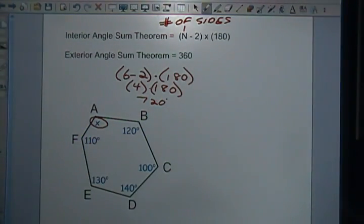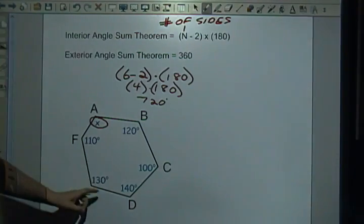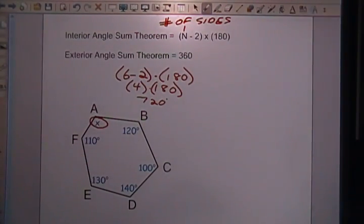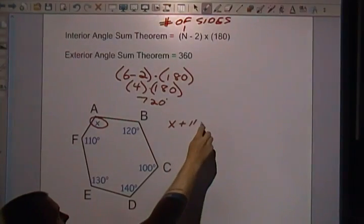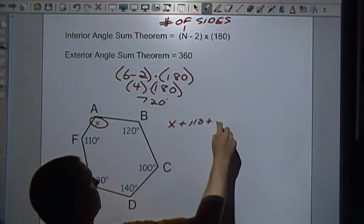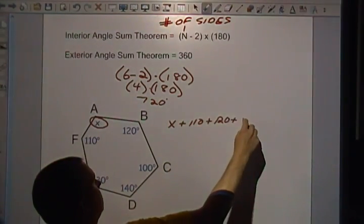So there's 720 degrees in this shape total, but we've already got five angles that we know. So if I were to write out my equation here, it would look something like this: x plus 110 plus 120 plus 100, 100 plus 130 plus 140 has to add up to equal 720.